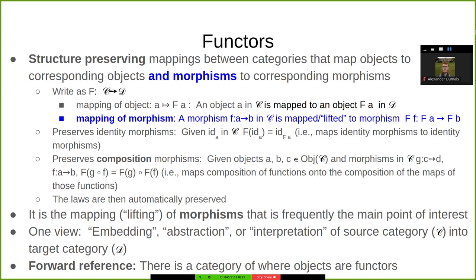One is a function mapping objects to objects — a function for small categories. The other is actually a set of functions, one for each pair of objects, that maps morphisms to morphisms between those pairs of objects. Basically, they're structure-preserving mappings between categories — mapping objects to objects and morphisms to morphisms.